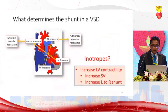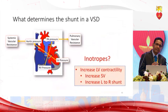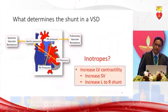What about inotropes in VSD? Inotropes increase contractility, increasing flow both into the aorta and through the VSD, so they also increase left-to-right shunting. They will not be that helpful.